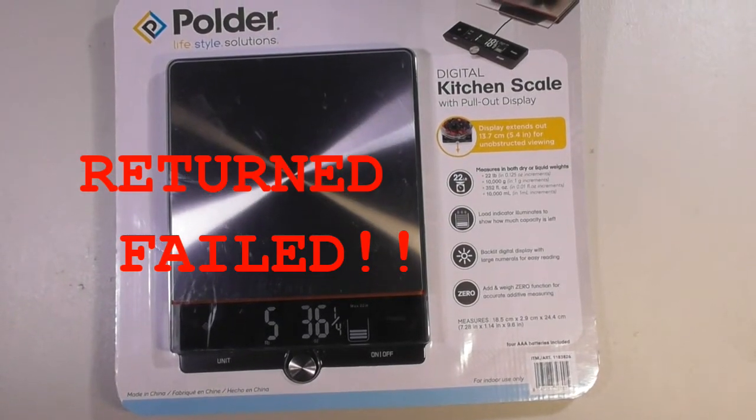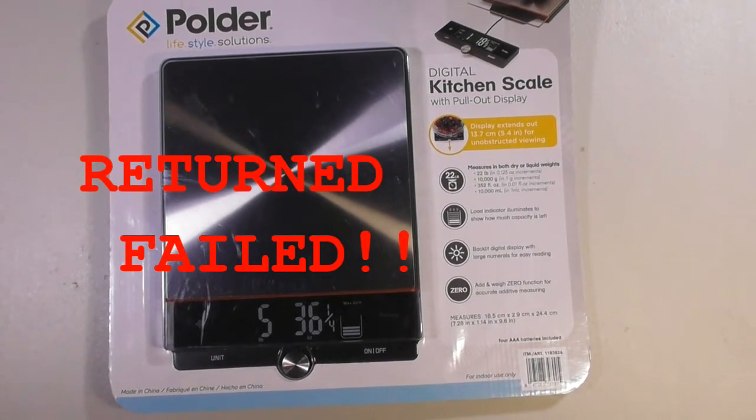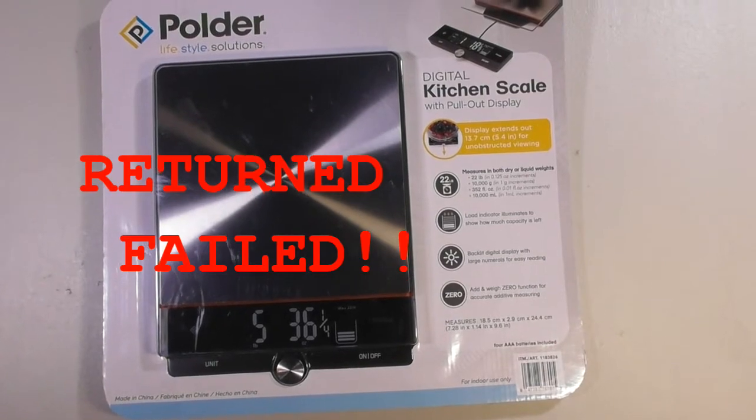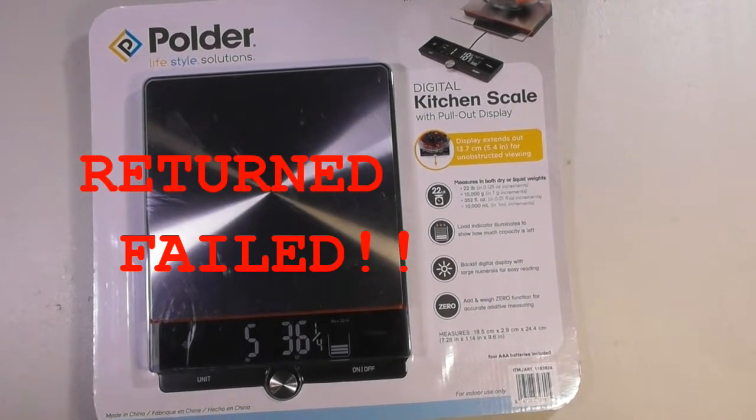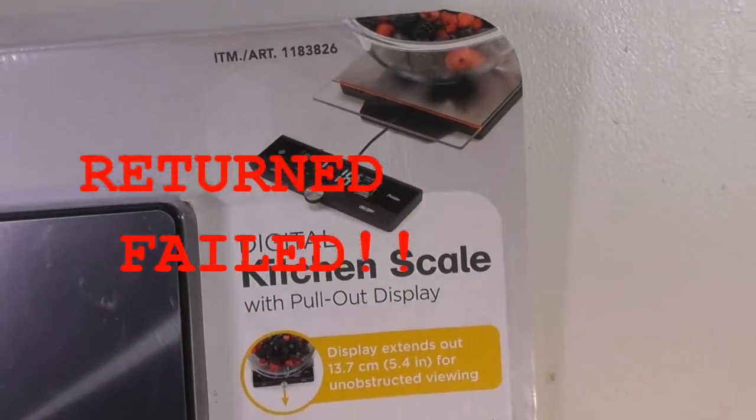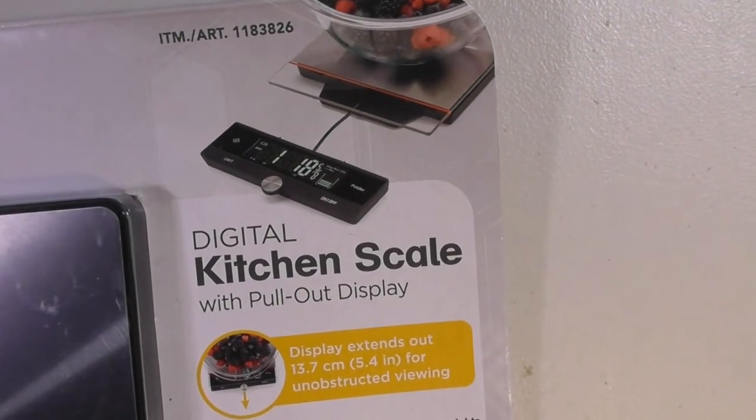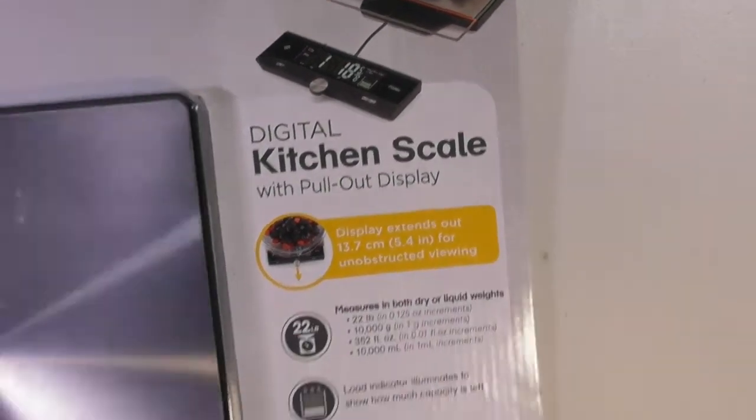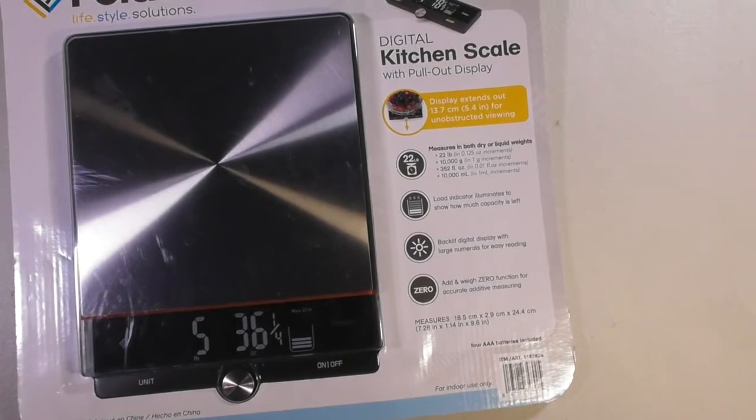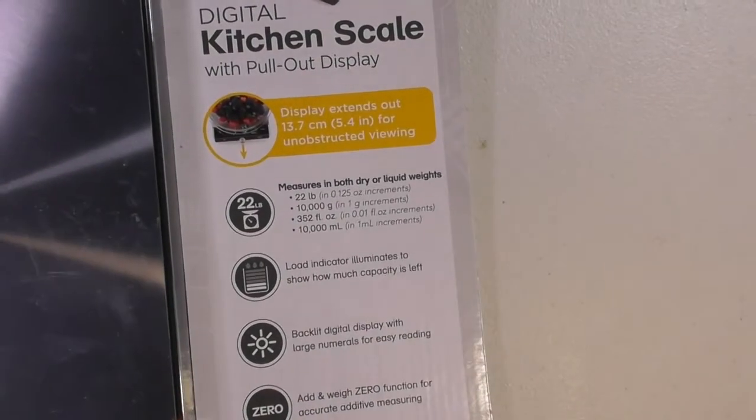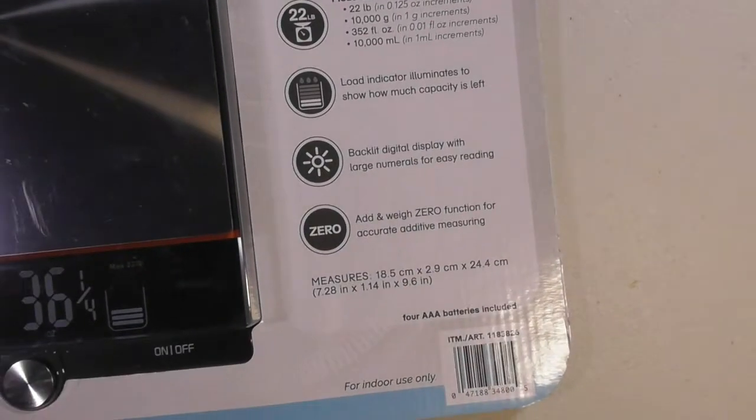This is going to be a video review of the Polder digital scale that I picked up at Costco. Item number is 1183826. So let me unbox this thing and we will see what it's capable of.